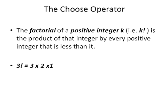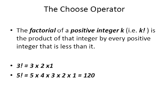The factorial of a positive integer, denoted k factorial with an exclamation mark, is the product of that integer by every integer that precedes it. For example, 3 factorial is 3 × 2 × 1, and 5 factorial is 5 × 4 × 3 × 2 × 1, which equals 120.